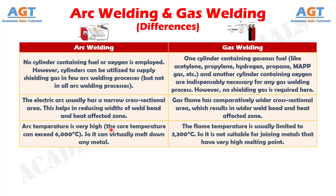Difference number 8. In arc welding, the arc temperature is very high — the core temperature can exceed 6000 degrees Celsius, so it can virtually melt down any metal. In gas welding, the flame temperature is usually limited to 3300 degrees Celsius, so it is not suitable for joining metals that have a very high melting point.